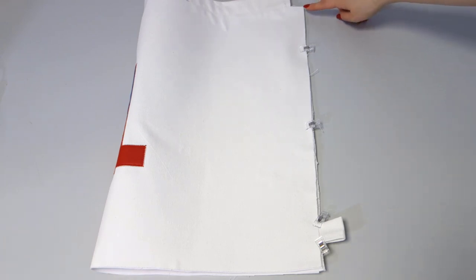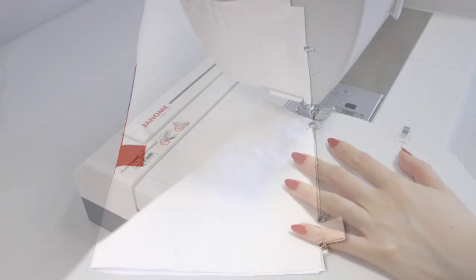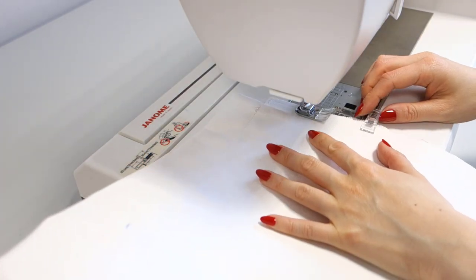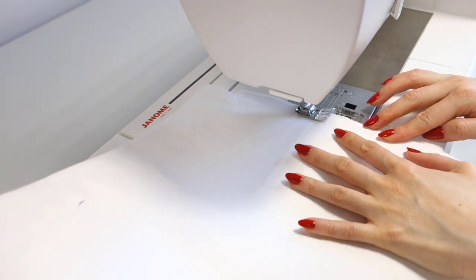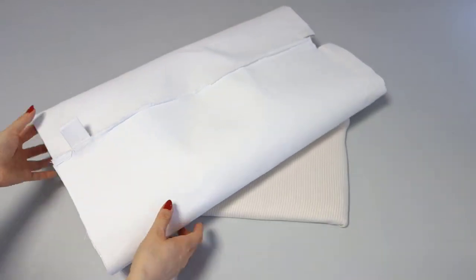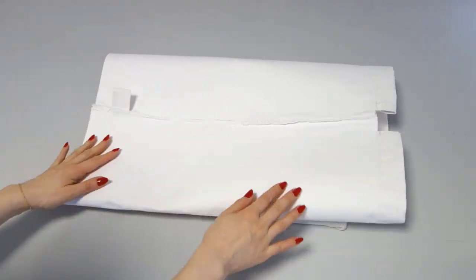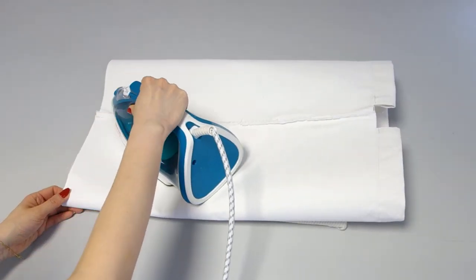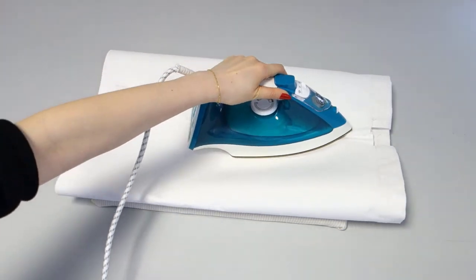Now we will sew the sides using a French seam. Secure the fabrics and simply sew with a seam allowance of 0.5 cm or a quarter of an inch. After sewing, open the seam allowance and press it to one side. Be careful not to damage the vinyl applique while ironing.